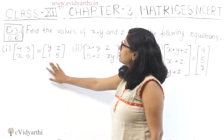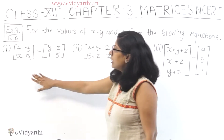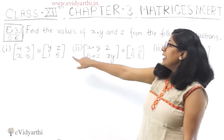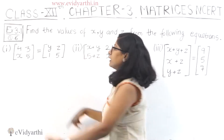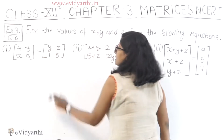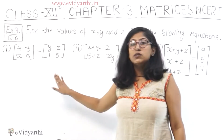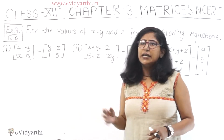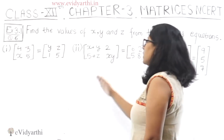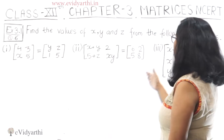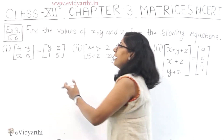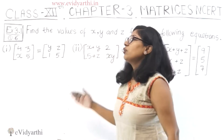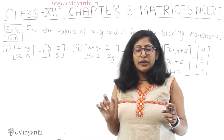Let's see what we have here. We have x, y, and z — their values are unknown, so we need to find them. This is a very, very simple question. When we talk about equal matrices — here is one matrix and here is one matrix — when they are equal, the two matrices have all corresponding entries equal.